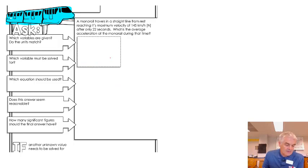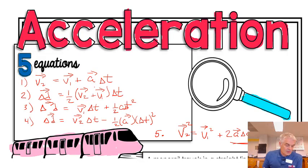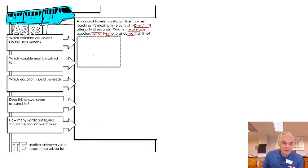A monorail travels in a straight line from rest, reaching its maximum velocity of 145 kilometers per hour to the north after 22 seconds. What is the average acceleration of the monorail during that time? So, now what I want to do is we're going to look back and find out which equation applies. So, which equation are we going to use here? Number one, number two, number three, number four, or number five? Now, hopefully you're realizing that I'm giving you the easy one first. It's going to be number one right here, right? Because I want to find a new velocity.